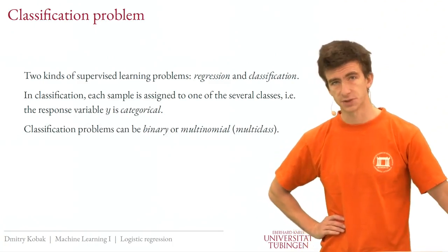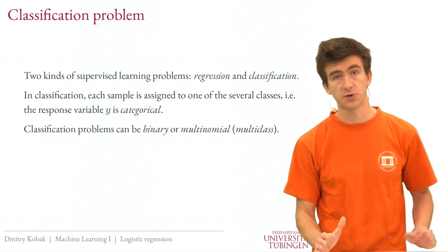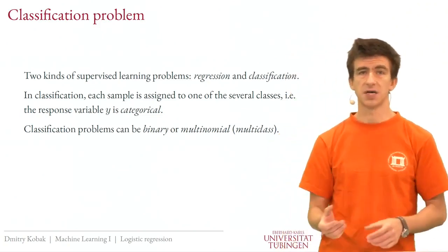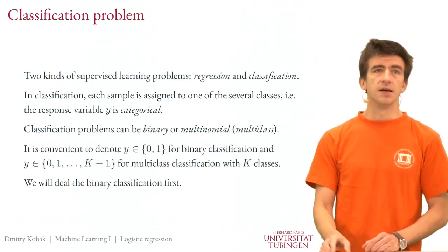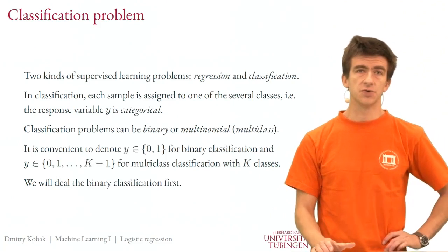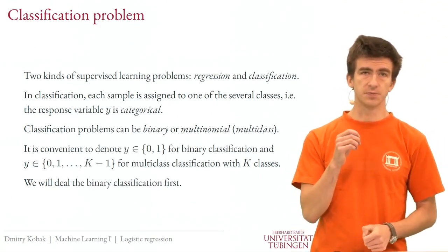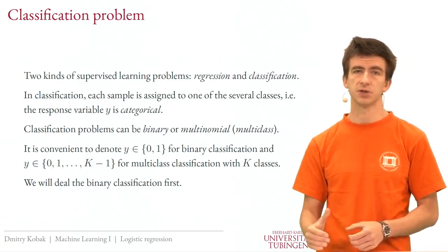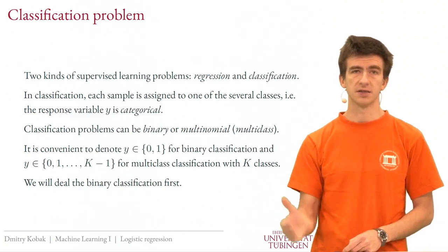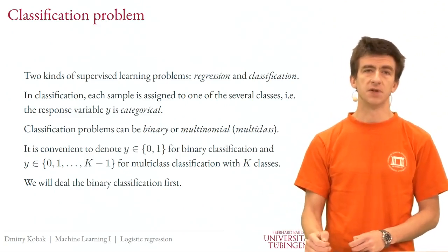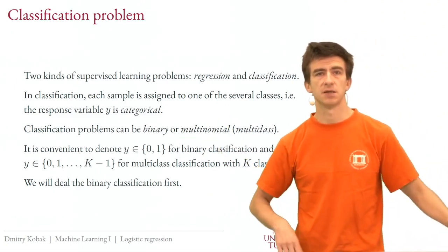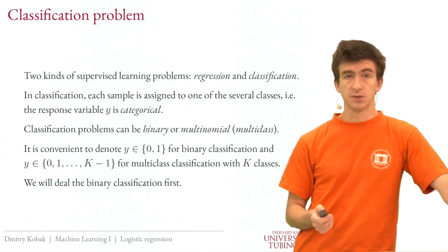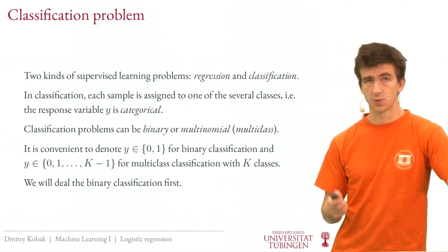If there are only two classes, which is by far the most common situation at least in textbooks, this is called a binary classification problem — for example, cat versus dog. If there are more than two classes, this is called a multi-class or multinomial classification problem. It is mathematically convenient to label each of the categories with an integer starting from zero. For binary classification, Y takes values in {0, 1}. If there are more than two classes, it goes from 0 to K minus 1, where K is the number of classes. We will spend most of the lecture talking about binary classification, so from now on I'll just talk about zeros and ones.